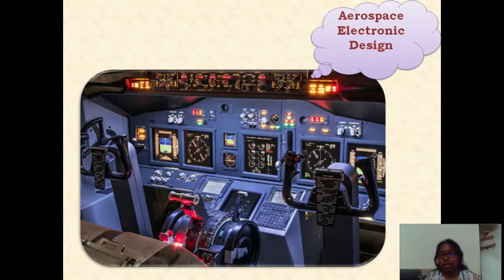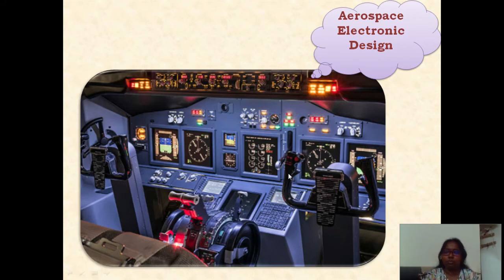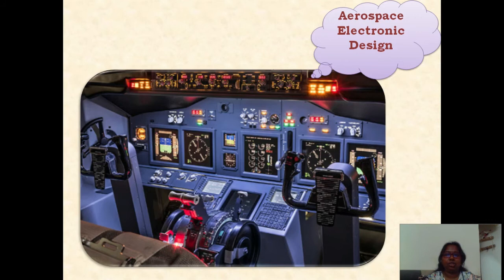Another example would be in aerospace — in aeroplanes. Another example of aerospace electronic design involves the cockpit of a pilot, where most of the devices — navigation and everything you see — are made of electronic engineering.